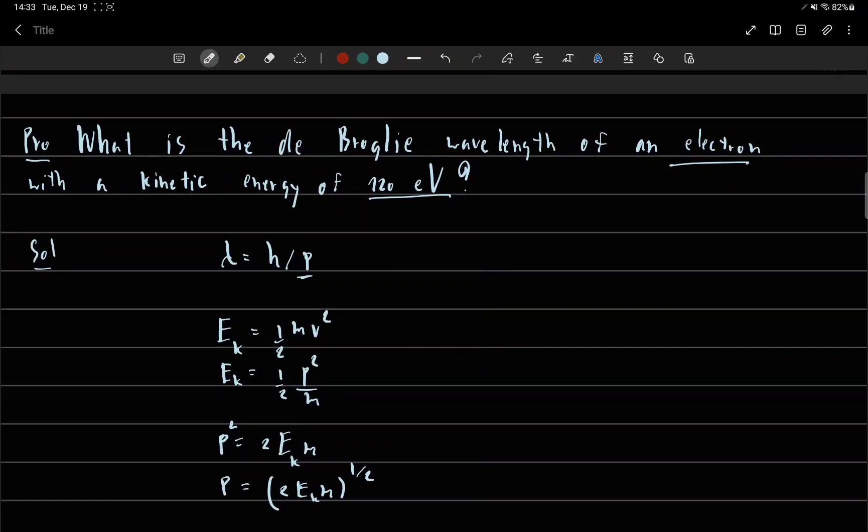What is the de Broglie wavelength of an electron with a kinetic energy of 120 electron volts?